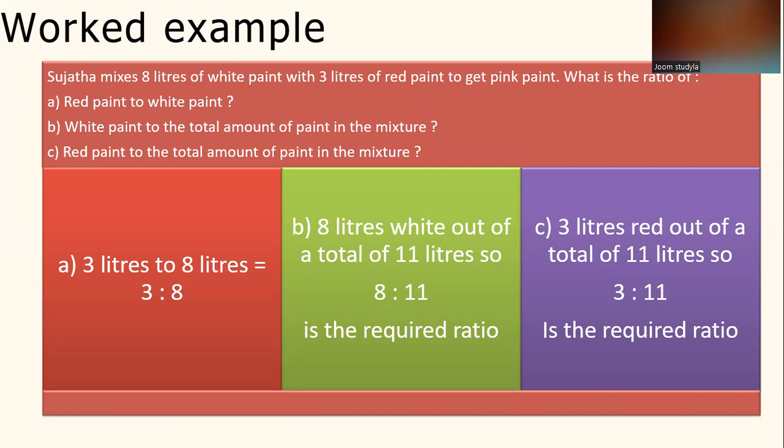Question B, white paint to the total amount of paint in the mixture. When 8 liters of white paint plus 3 liters of red paint brings the total to 11 liters. So white paint, we already know that it's 8 liters to the total amount of paint. That means 8 liters white out of a total of 11 liters. So we write it as 8 to 11.